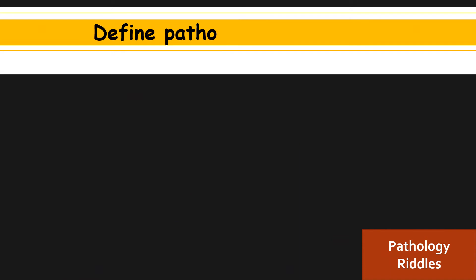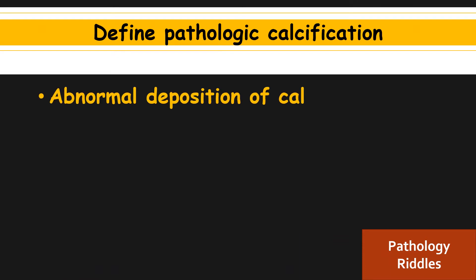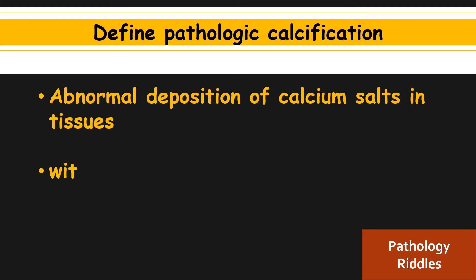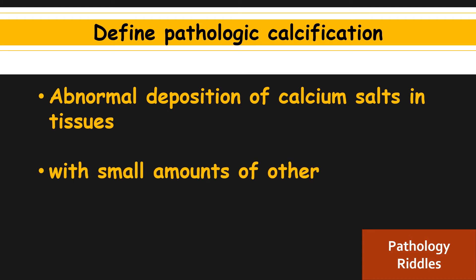The first question is: define pathologic calcification. Pathologic calcification is the abnormal deposition of calcium salts in tissues, with small amounts of other mineral salts like iron and magnesium.